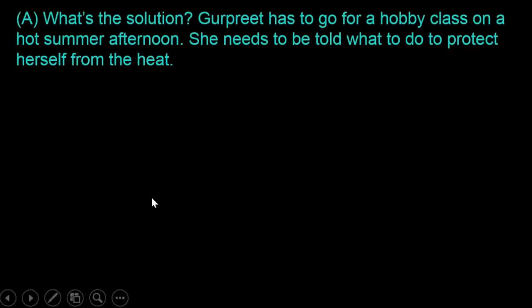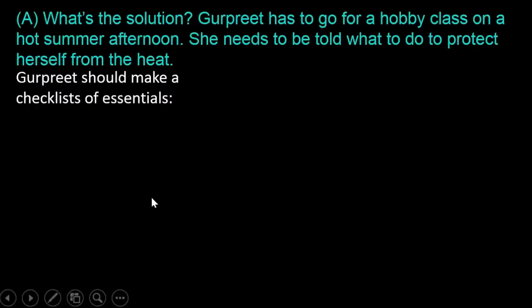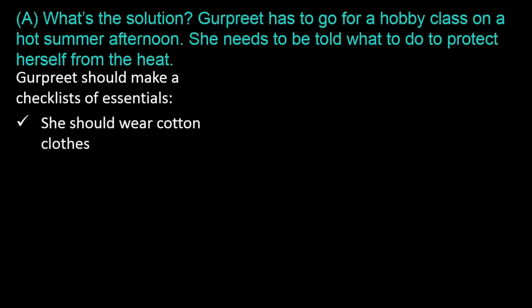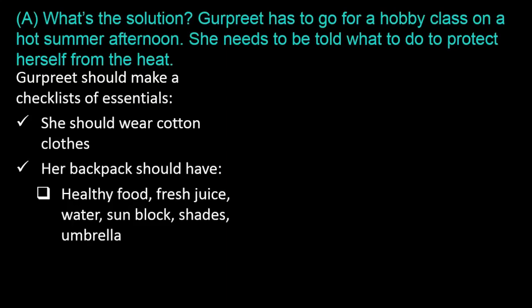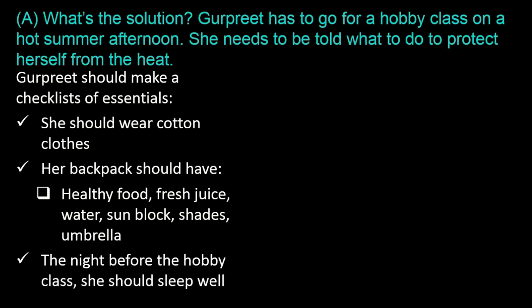Gurprud should make a checklist of essentials that she needs for the hobby class on a hot summer afternoon. She should wear cotton clothes. She should pack her backpack with healthy food, fresh juice, water, sunblock, shades, and umbrella. The night before the hobby class, she should sleep well.